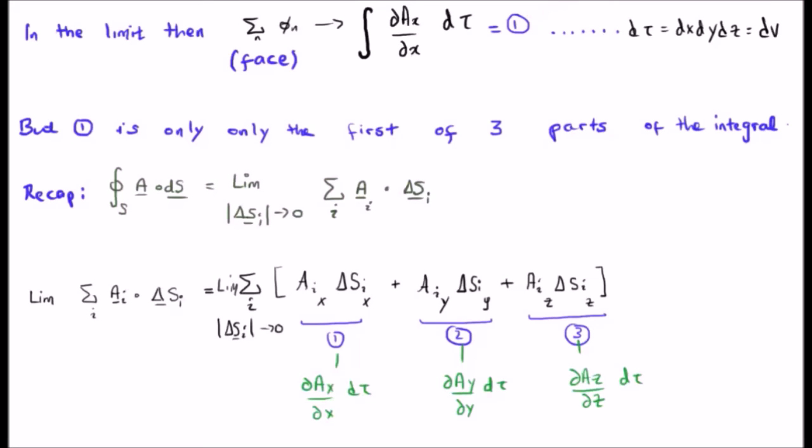But the point is that expression number 1 is only the first of three parts of the integral. In other words, we kept y and z fixed and varied x. What happens if you keep x and y fixed and vary z, or keep x and z fixed and vary y? Well, clearly, we're going to get something similar.